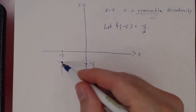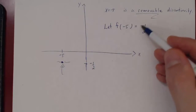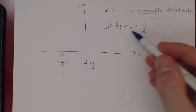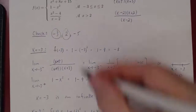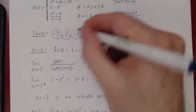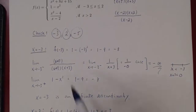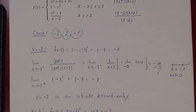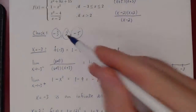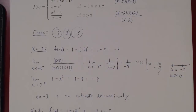We can remove the discontinuity by defining a proper y value at the point. To summarize: we have an infinite discontinuity at x equals negative 3, a jump discontinuity at x equals 2, and a removable discontinuity at x equals negative 5.